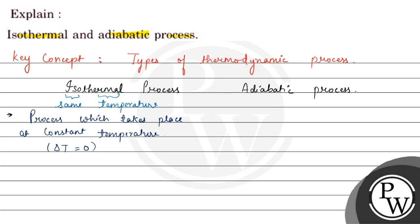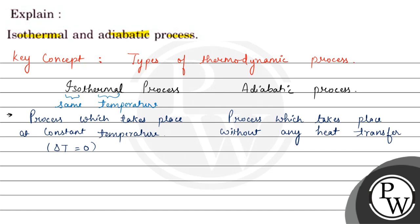Whereas the adiabatic process is a process in which delta Q is zero, meaning heat change is zero. It is a process that occurs without any heat transfer between the system and the surrounding. Therefore, delta Q is equal to zero in an adiabatic process.